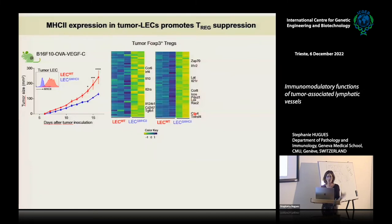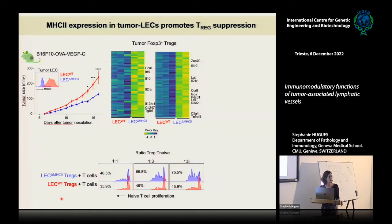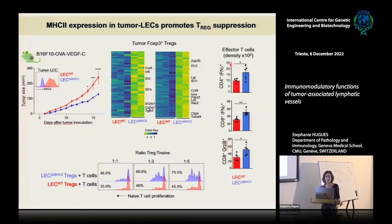We tested T-reg functionality ex vivo by sorting regulatory T cells from control tumors or from tumors in which LECs do not express MHC class 2, and co-culturing them with T cells induced to proliferate at different T-reg to naive T cell ratios. The T-regs isolated from the conditional knockout were less competent at inhibiting the proliferation of other T cells compared to T-regs from control tumors. As a consequence, effector T cells in the conditional knockout tumors were increased, with more CD4 and CD8 T cells producing gamma interferon, and we believe this is why we observe a decrease in tumor growth.